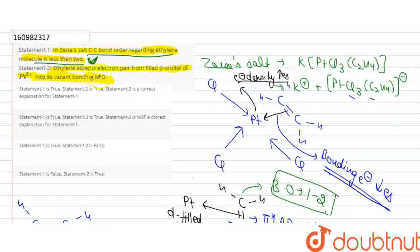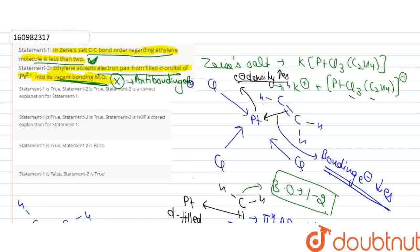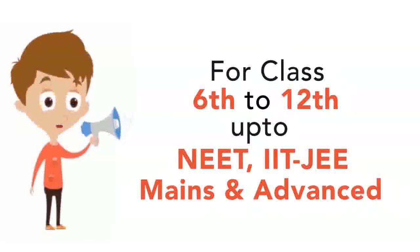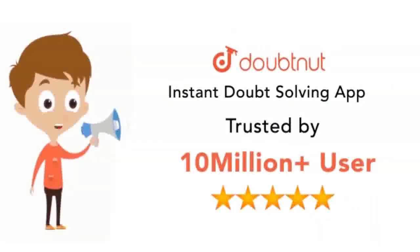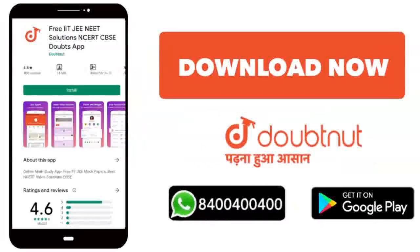For ethylene in Zeise's salt, the C-C bond order is less than 2 — this statement is correct. However, ethylene accepts electrons into the anti-bonding orbital, not the bonding orbital — so statement 2 is false. Statement 1 is true and statement 2 is false, so the third option is correct. Thank you.